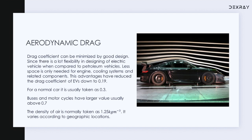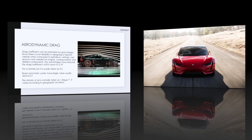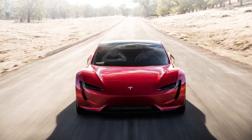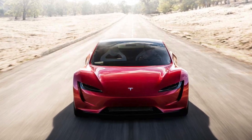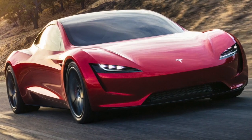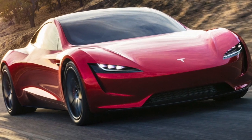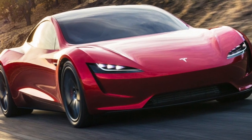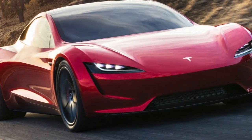One more thing for calculations: the normal density of air is taken as 1.25 kg/m³. While talking about aerodynamic drag, it is worth mentioning the Tesla Roadster, popularly known as the world's fastest electric car. While designing this car, they even removed the side mirrors to make the aerodynamic drag as minimum as possible.